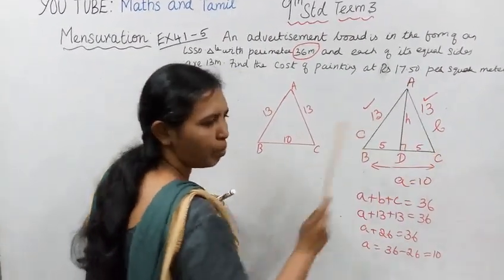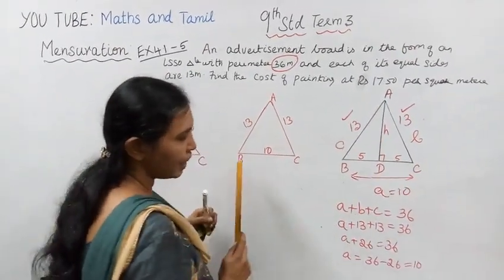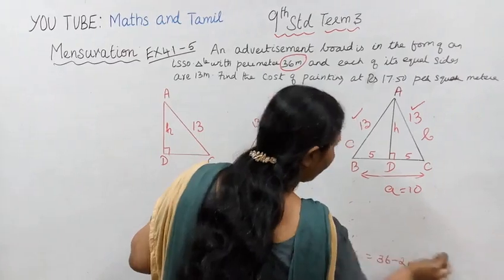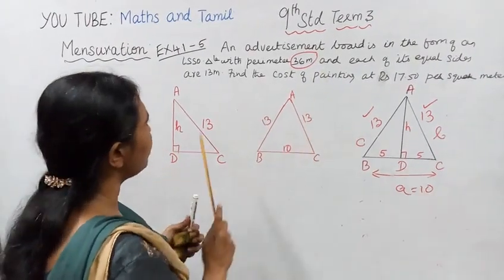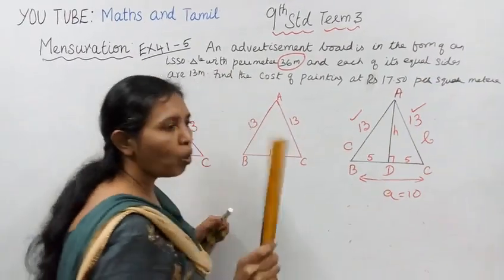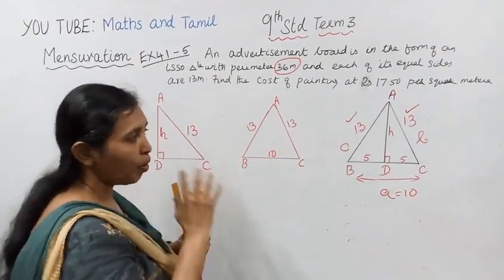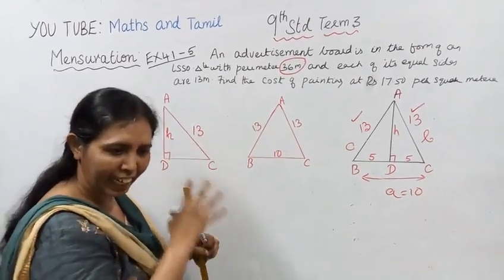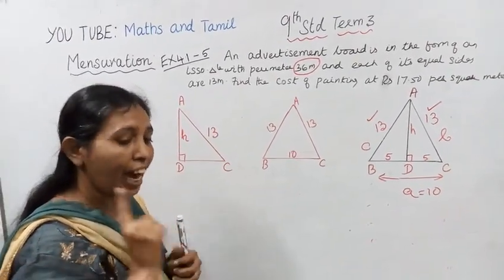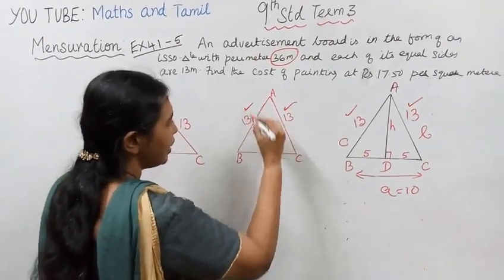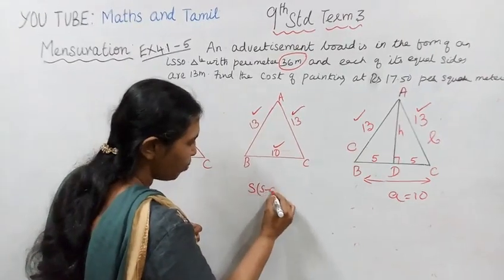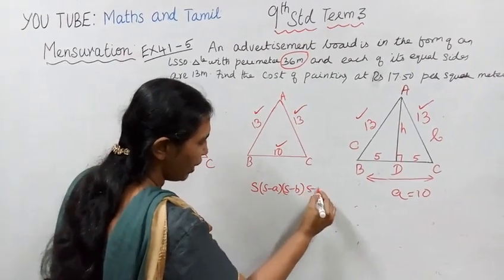AD is perpendicular to BC. Now to find the area of the triangle, we need the formula. When three sides are given we can use Heron's formula: square root of S into (S minus A) into (S minus B) into (S minus C), where S equals (A plus B plus C) divided by 2.